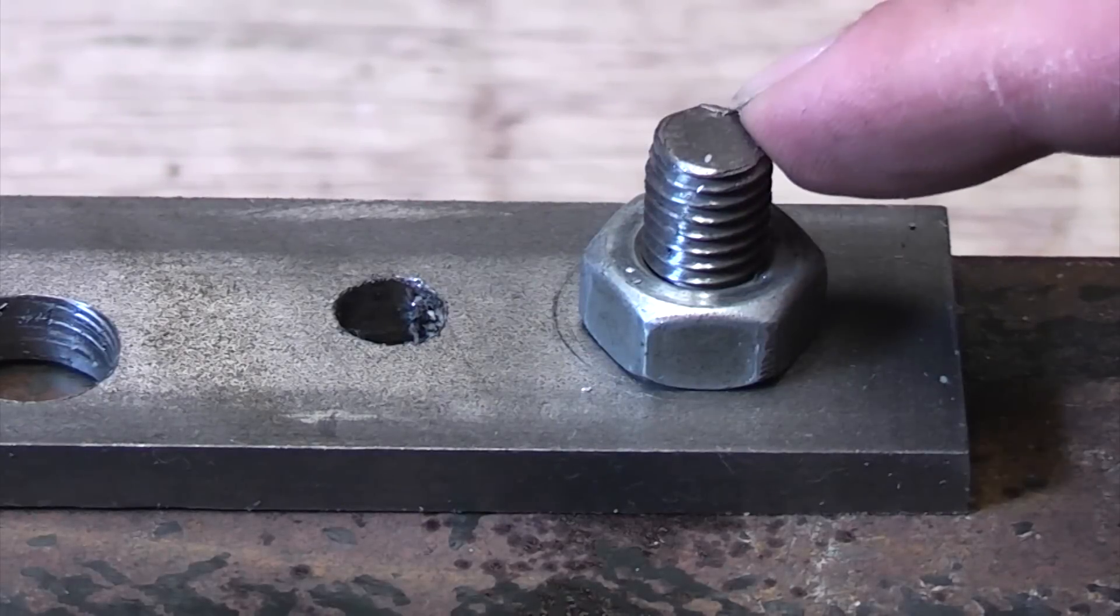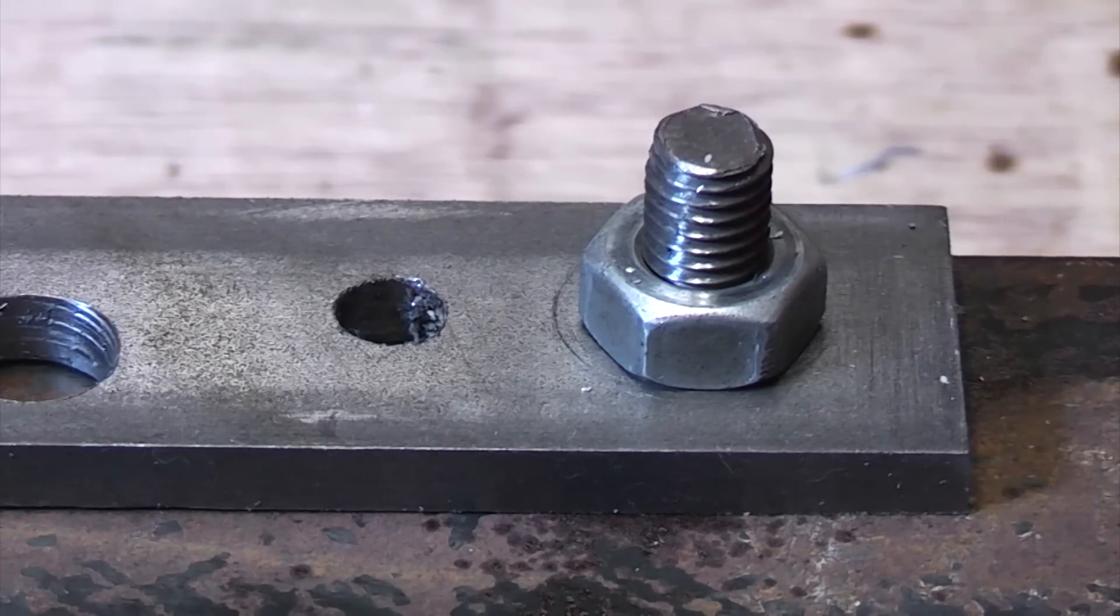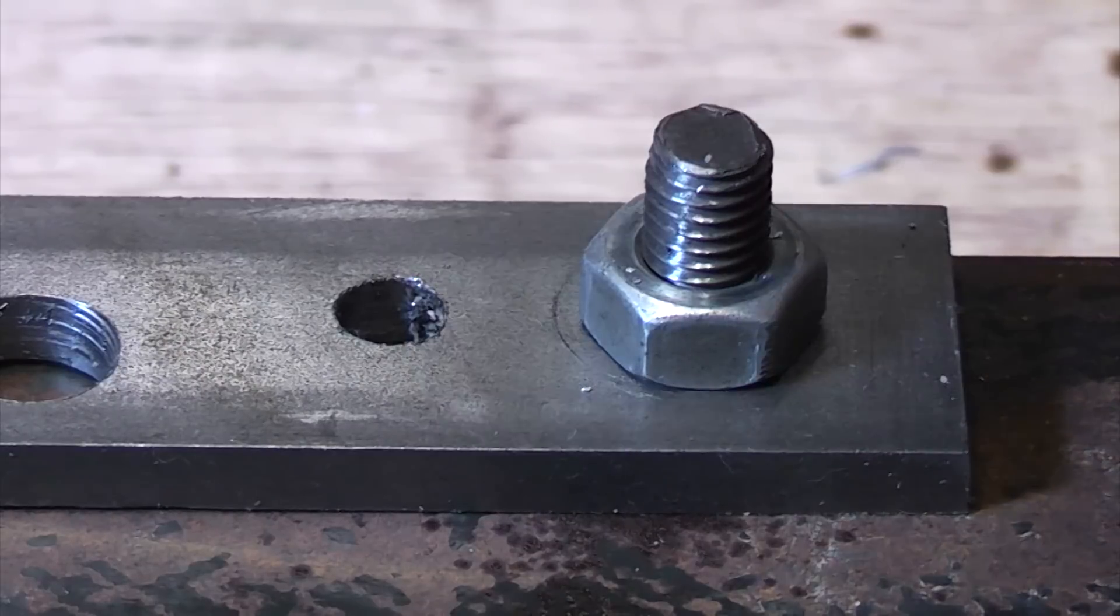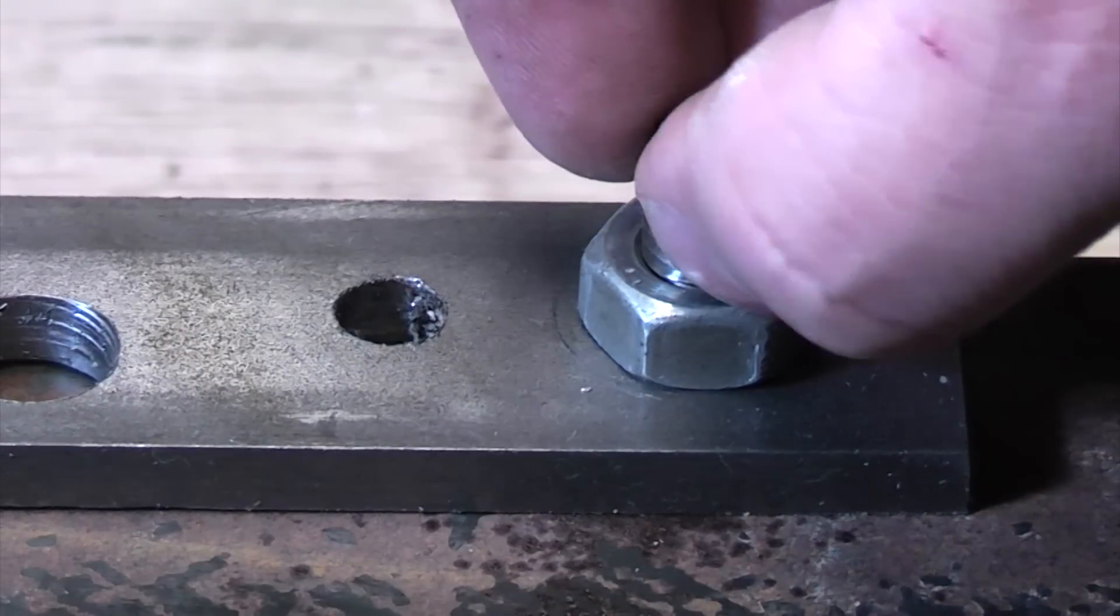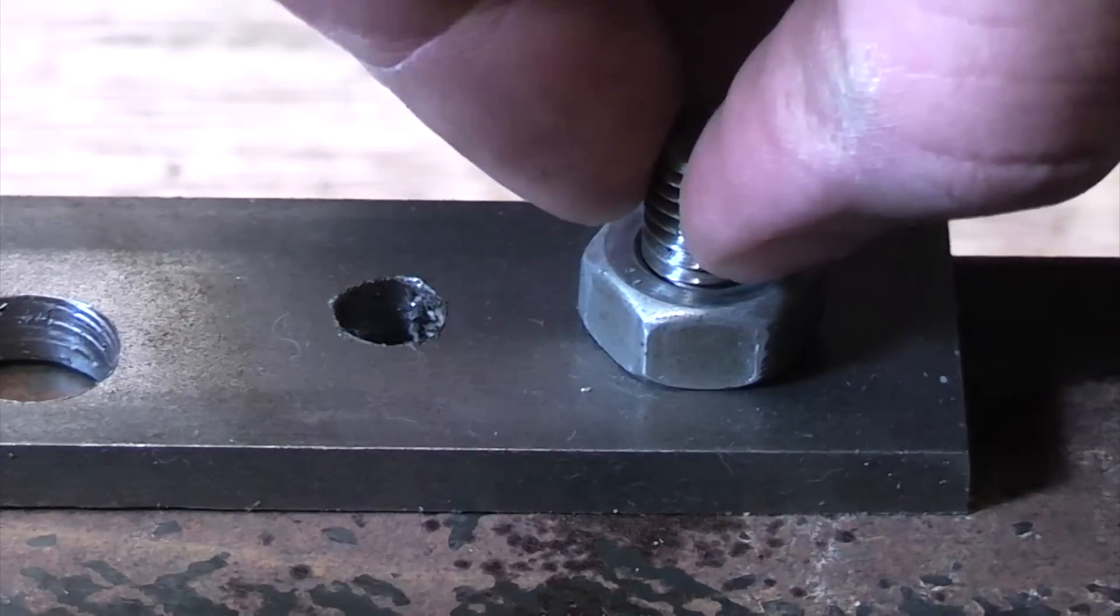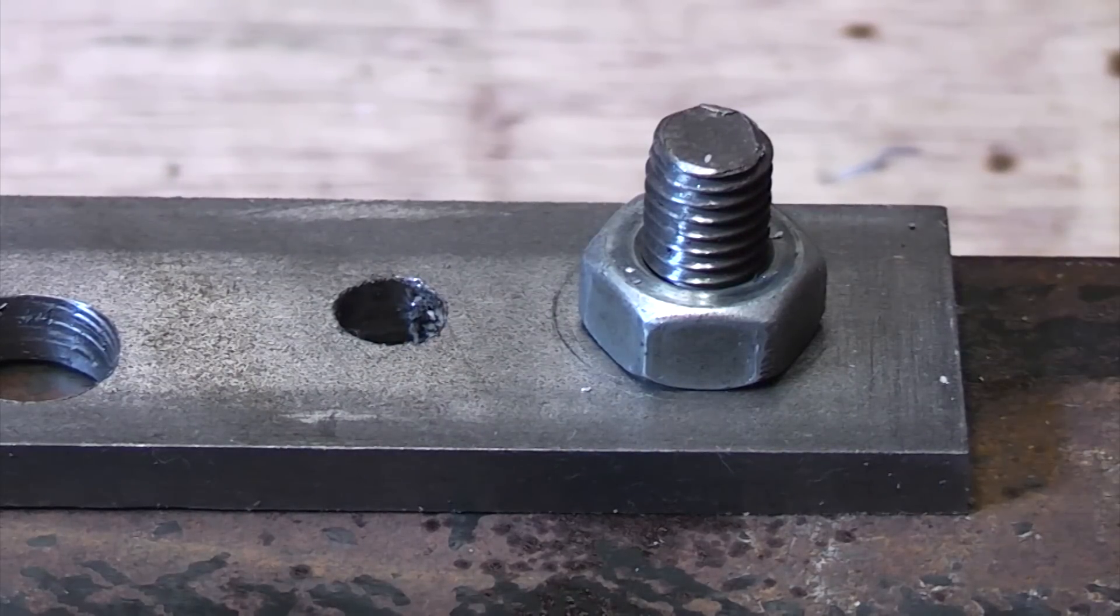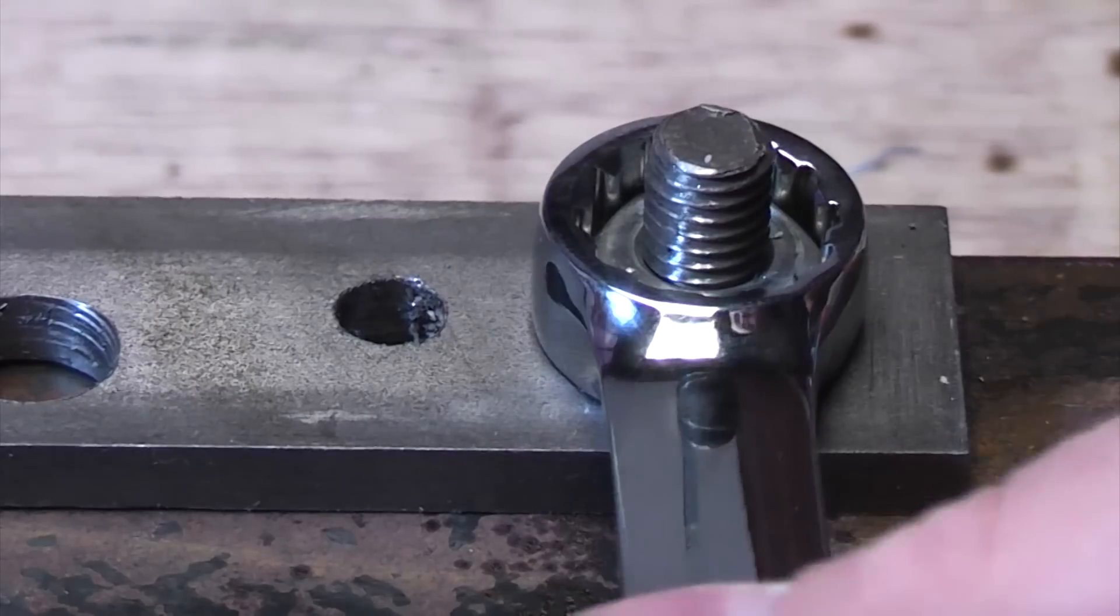So if you ever come across a stud like that and you need to remove it, you can always go out and buy a stud remover which actually fits over the stud and when you turn it, it grips it and will remove it. But the problem is you damage your thread. So there is an easier way that you can try before you go out and buy a stud remover.